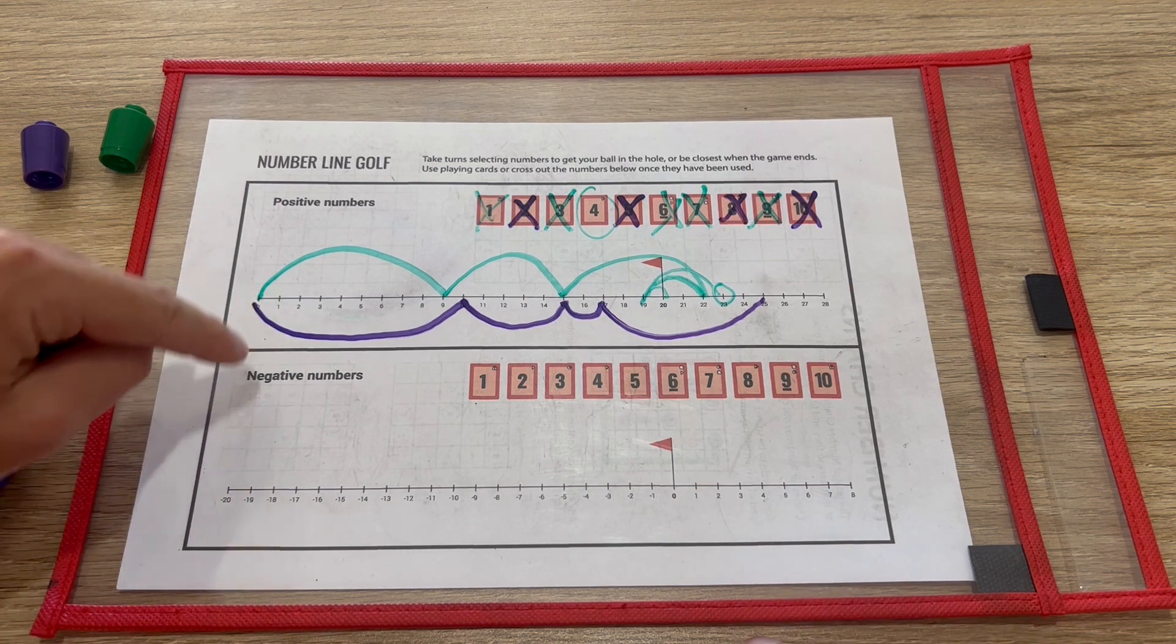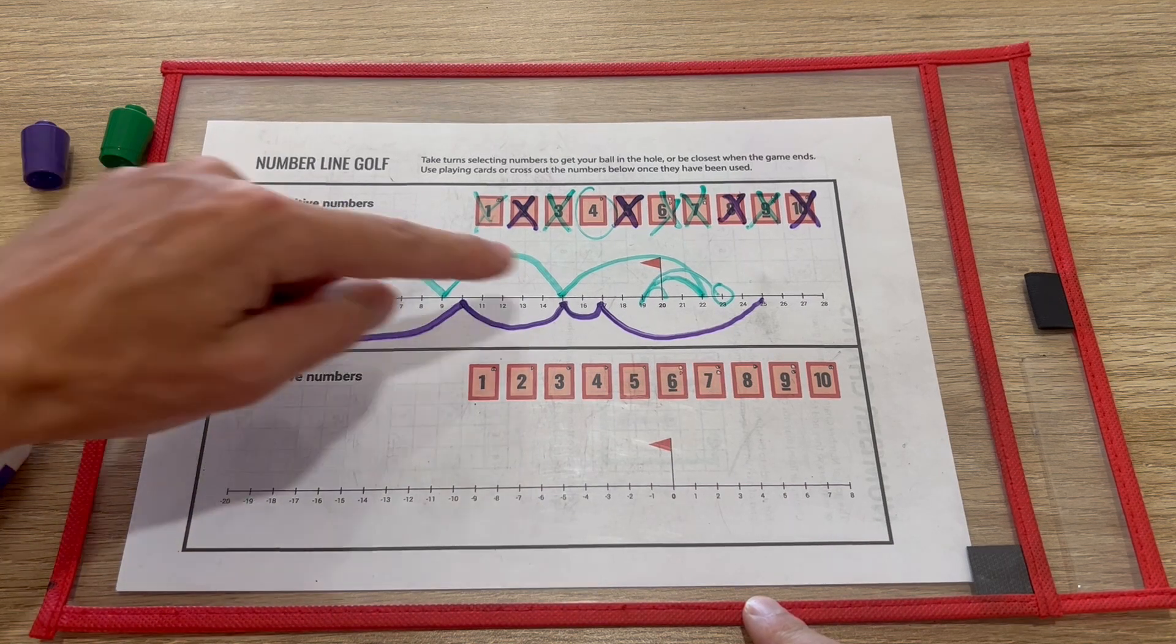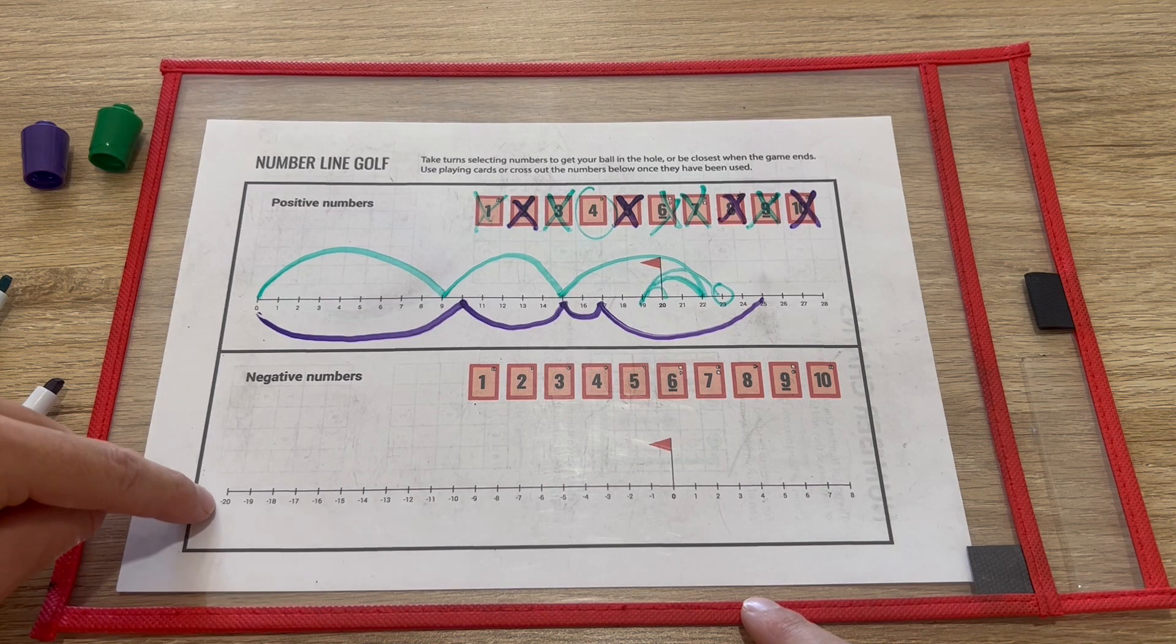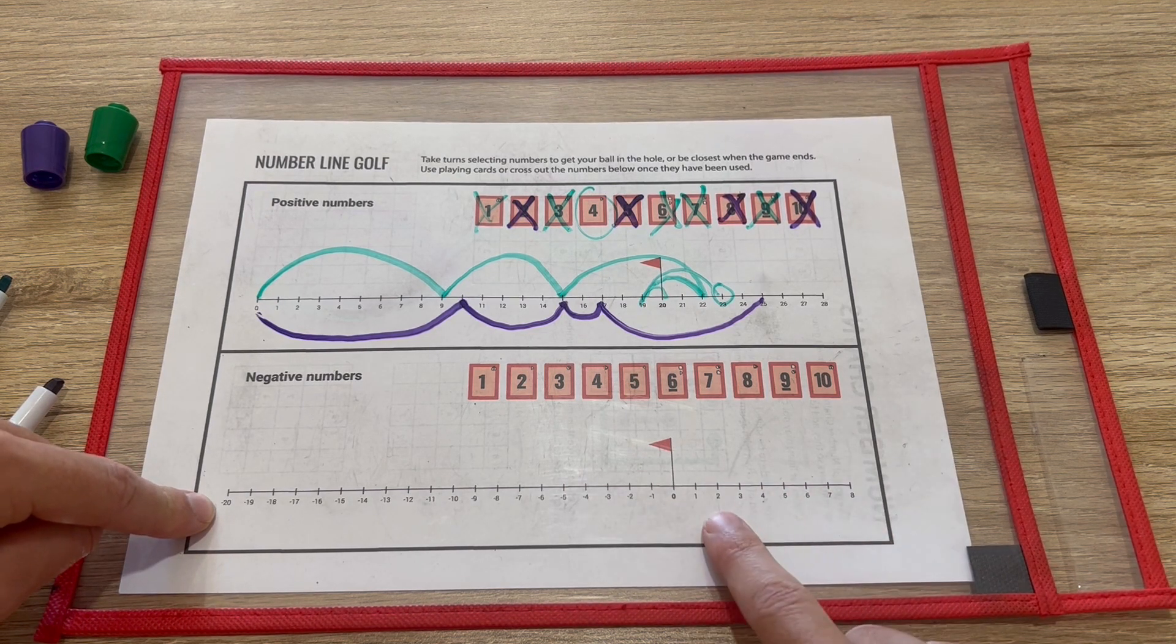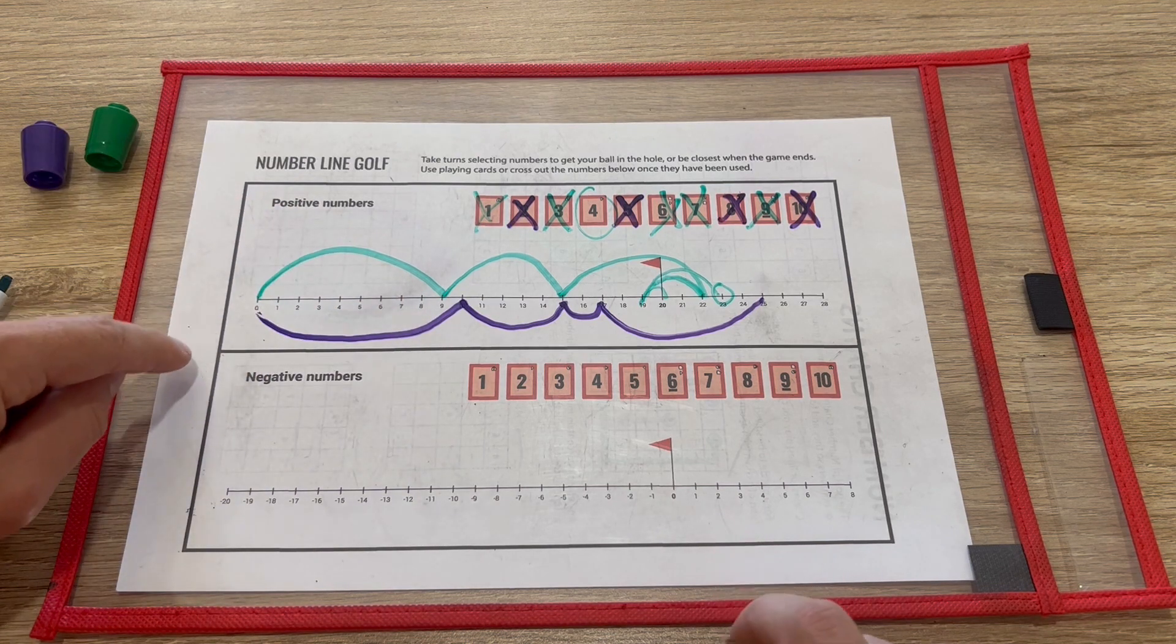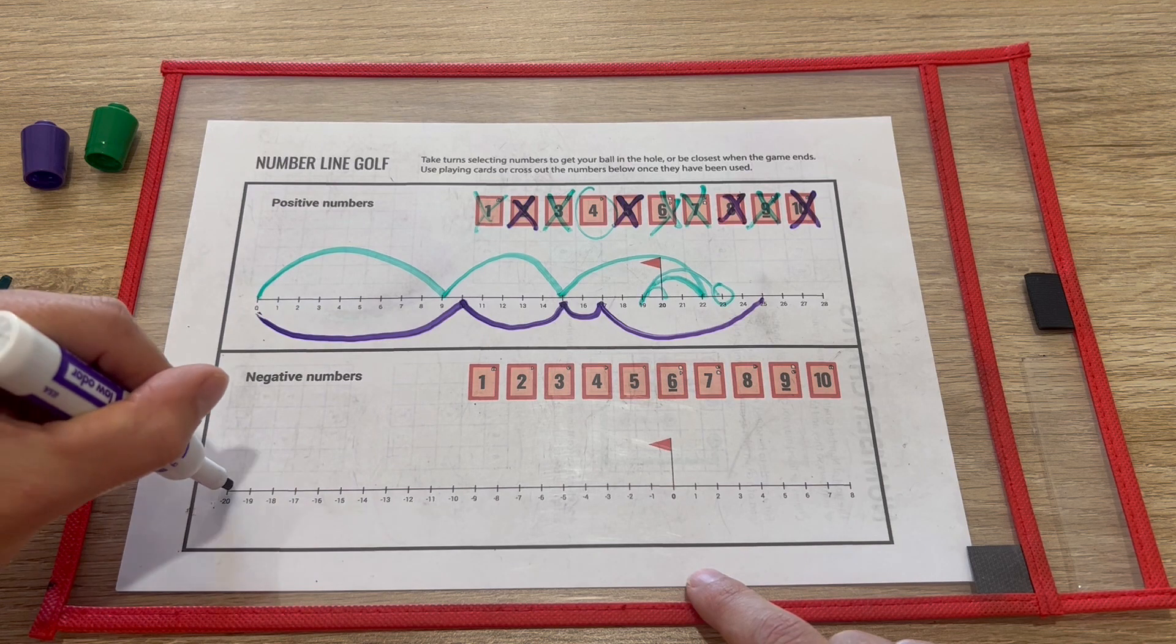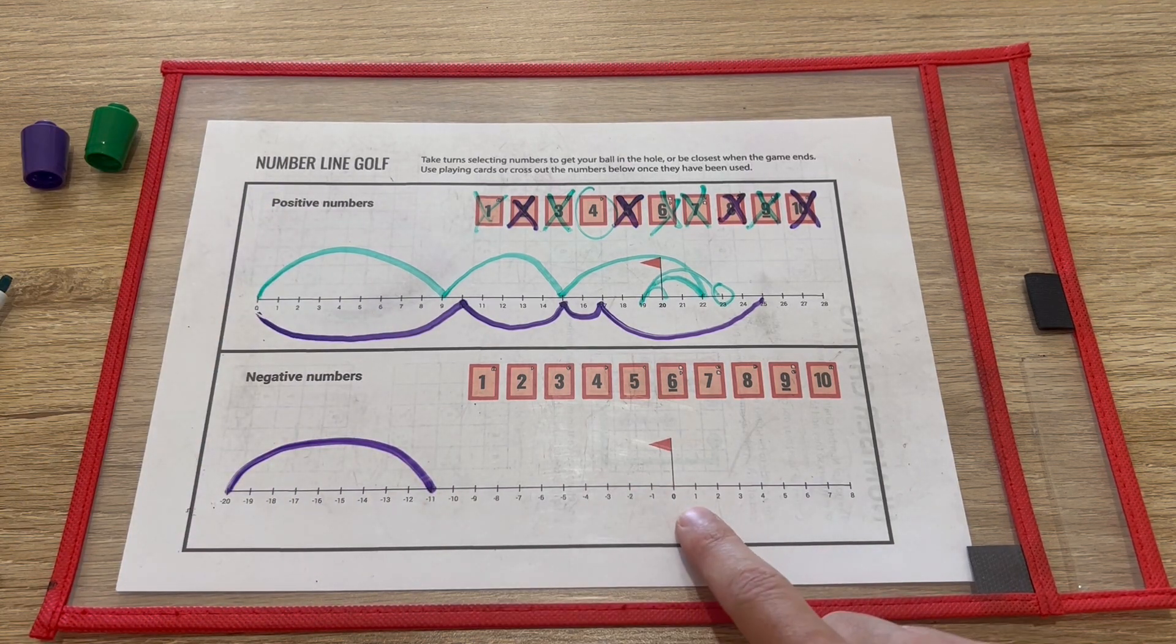So the lovely thing about this is you can scaffold it by playing a game on positive numbers, so it's 0 to 20 and then past 20, or negative numbers. So the negatives represent how far you've got to go to the hole, and then how far past the hole you've gone. And the game will work exactly the same way, so if you pick a 9 you still move to that spot, but in this case it's minus 11, because you're 11 positions away from the hole now.